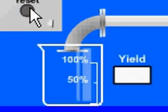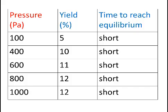we alter the pressure between treatments and see what effect that has on yield and on the time taken to reach equilibrium. We see that as we increase the pressure, that improves the yield, but it doesn't really, for this particular temperature, affect the time taken to reach equilibrium.